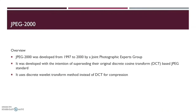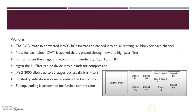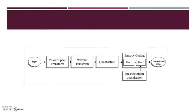JPEG 2000 was developed from 1997 to 2000 by the Joint Photographic Experts Group, with the intention of superseding the original discrete cosine transform based JPEG standard. It uses discrete wavelet transform method instead of DCT for compression. Working: the RGB image is converted into YCbCr format and divided into equal rectangular blocks for each channel — luminance, chroma blue and chroma red. For each block, discrete wavelet transform is applied by passing through low and high pass filters. For a 2D image, the image is divided into 4 bands: low-low, high-low, low-high and high-high. Entropic coding is performed for further compression. This is the block diagram of JPEG 2000: the input image undergoes color-space transform, then wavelet transformation, quantization, and finally entropy coding to receive the compressed image.